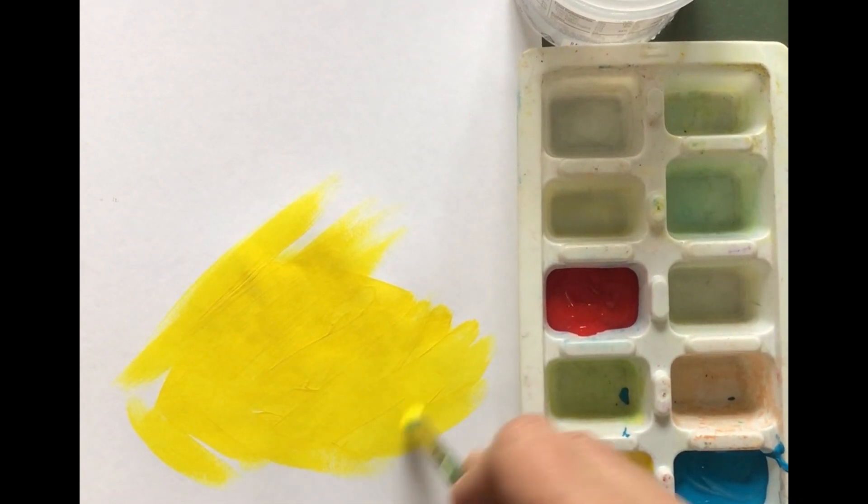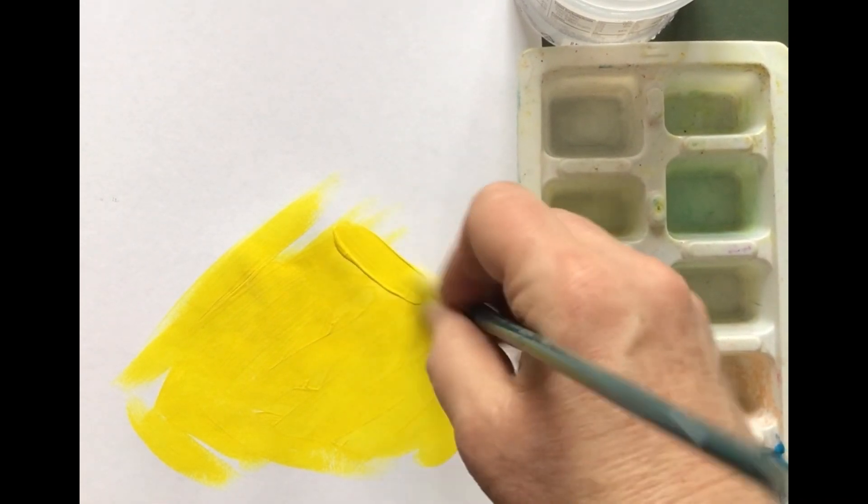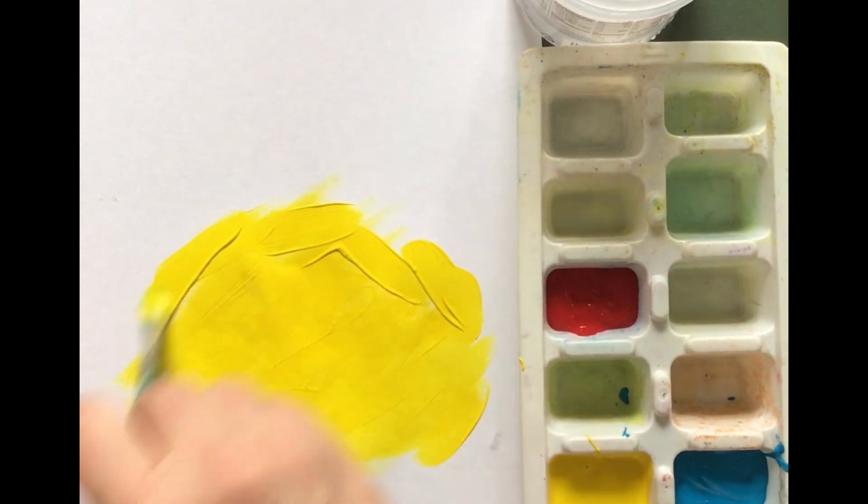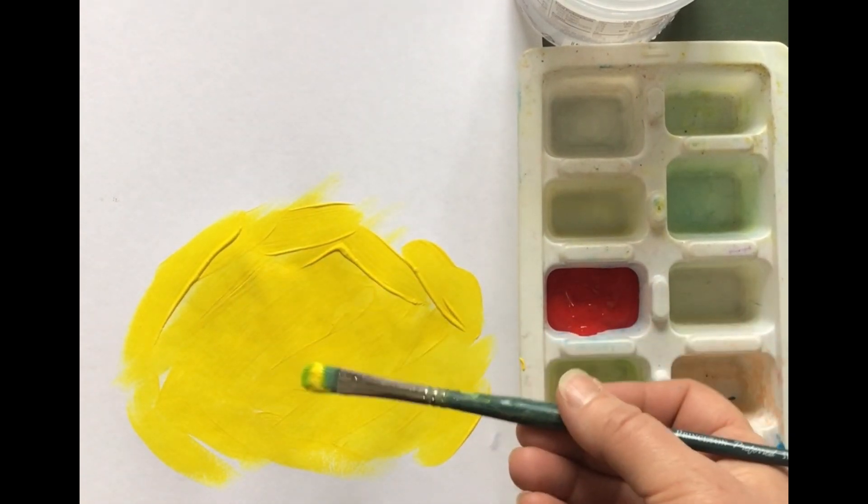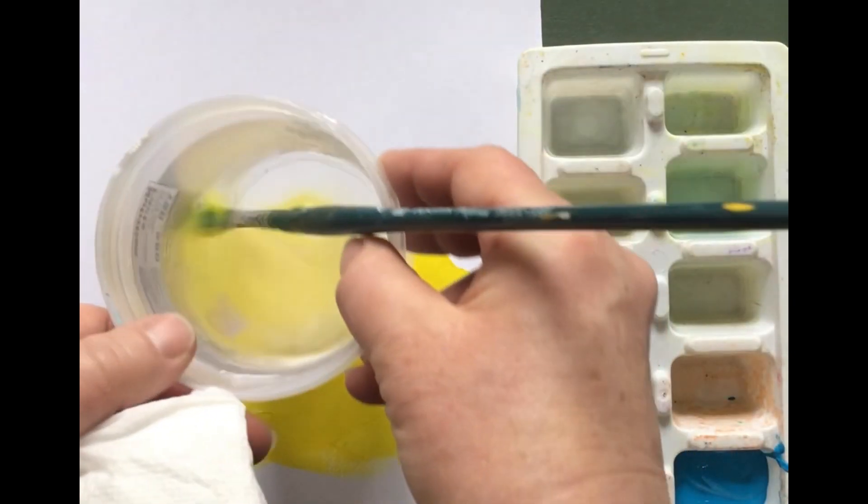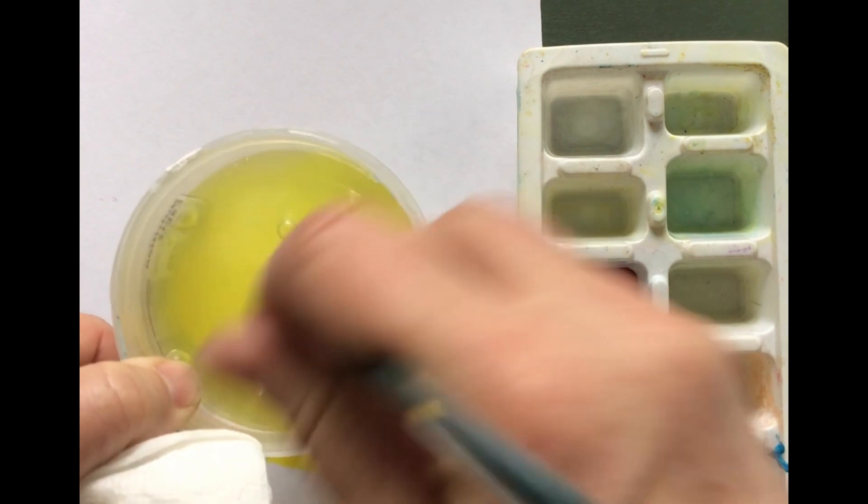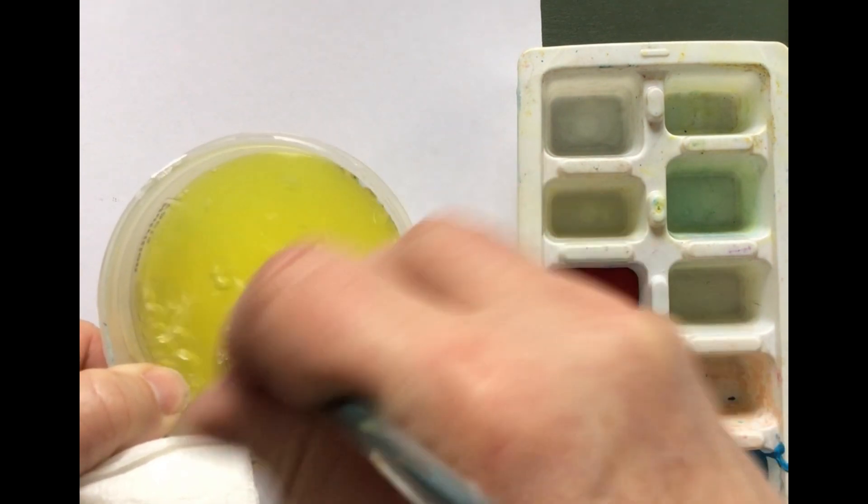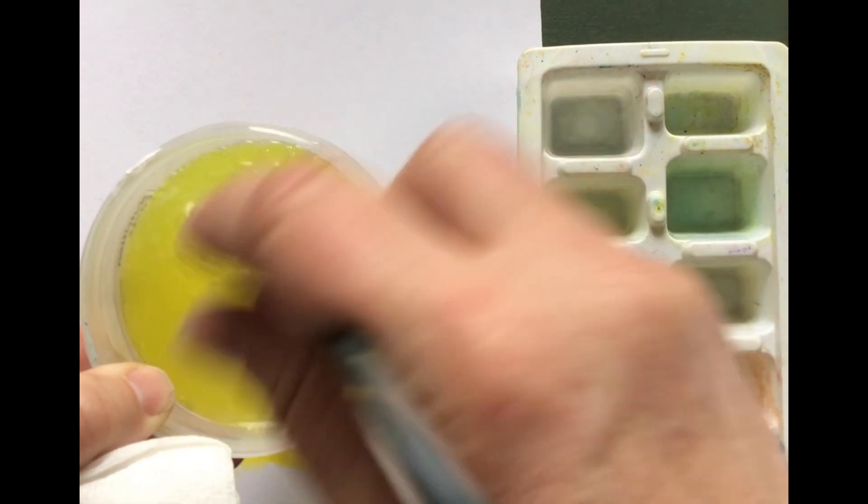Good job. So I'm putting a lot of paint down. And what color is this? Yeah, it's yellow. Good job. So now I want to clean my brush so I'm going to put it in the water and I'm going to swish it. Can you hear that sound? Go ahead and swish it.